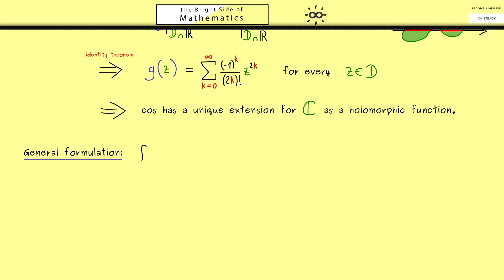So let's start with a C infinity function on R called f. Please recall we already know that holomorphic functions are C infinity functions. Therefore we really have to start with a C infinity function on R as well, otherwise it wouldn't be possible to extend it to a holomorphic function defined on C.